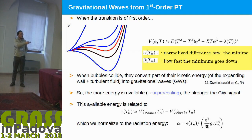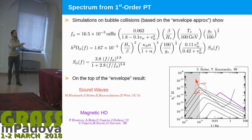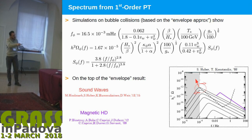Beta is how fast the potential goes down with temperature; alpha is what the energy gap is between the phases. The prediction for the spectrum in first approximation is a broken power law. All the black lines are the prediction of the signal depending on parameters alpha and beta.